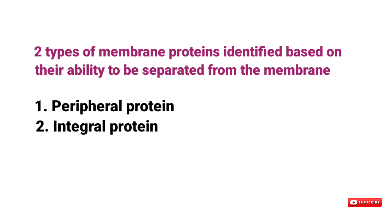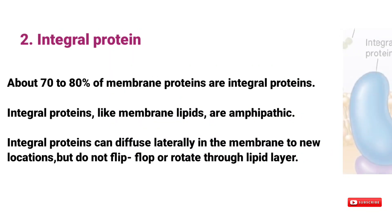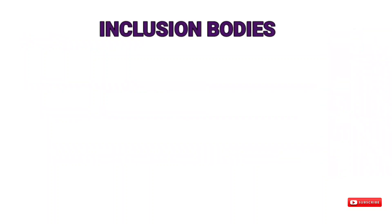Two types of membrane proteins have been identified based on their ability to be separated from the membrane. Peripheral proteins are loosely connected to the membrane, can be easily removed, are soluble in aqueous solutions, and make up about 20 to 30 percent of total membrane protein. About 70 to 80 percent of membrane proteins are integral proteins. Like membrane lipids, integral proteins are amphipathic and can diffuse laterally in the membrane but do not flip-flop through the lipid layer. Carbohydrates are often attached to the outer surface of plasma membrane proteins.